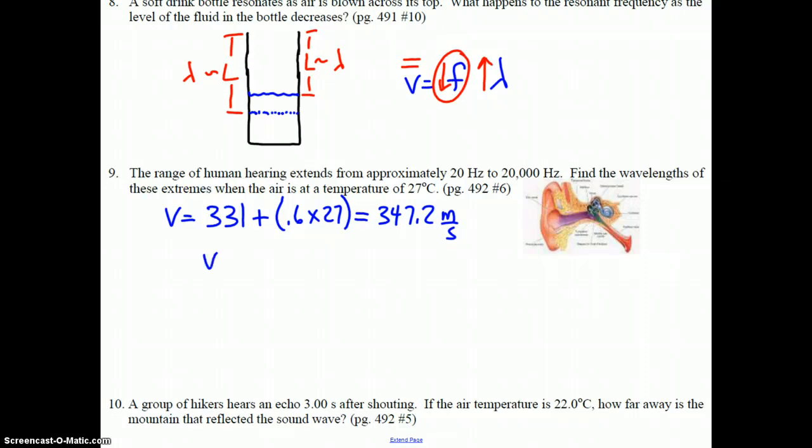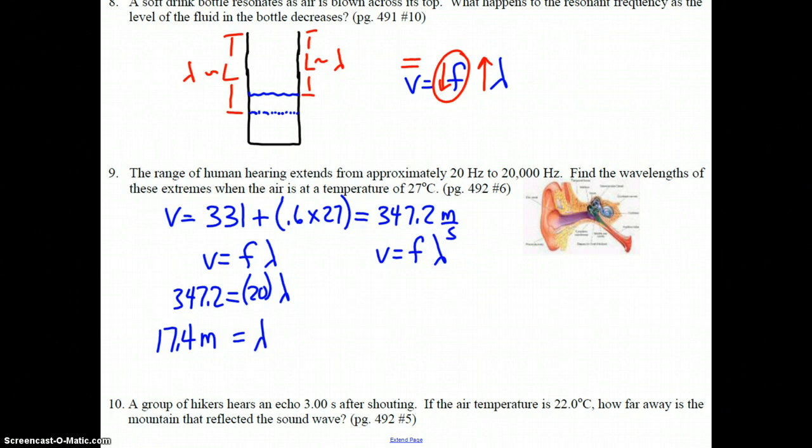All right, now all we have to do is two V equals F lambda calculations at our different frequencies to find our different wavelengths. 347.2 equals 20 times the wavelength. And our wavelength here would be 17.4 meters. We'll just do it to three digits.